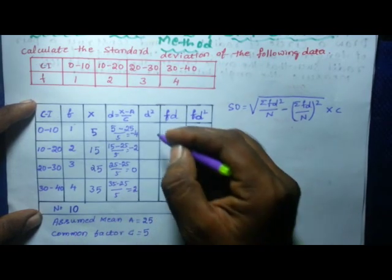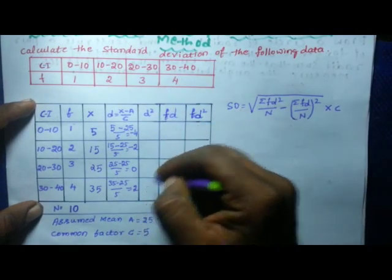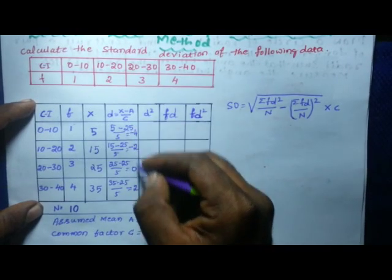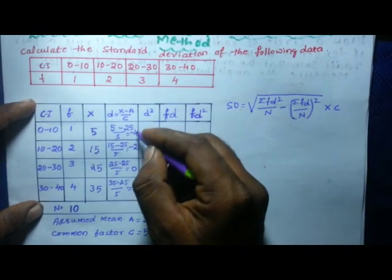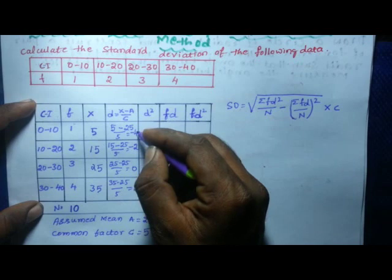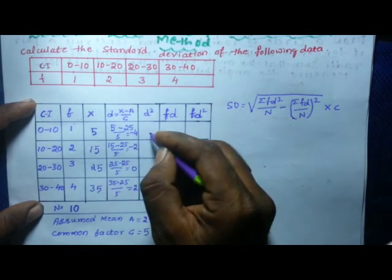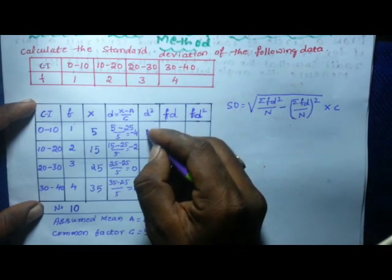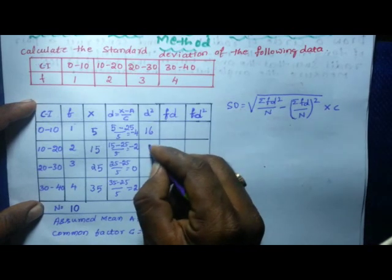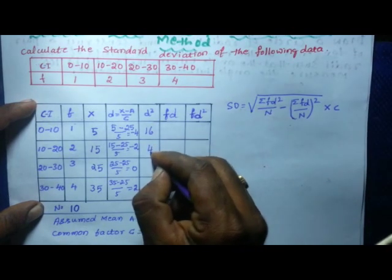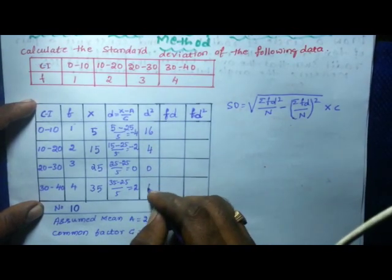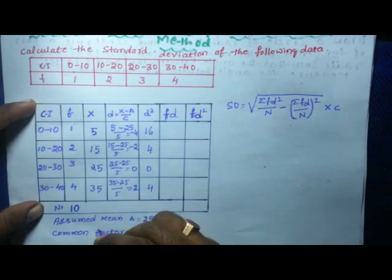Now find D squared for each value. Minus 4 squared is 16, minus 2 squared is 4, 0 squared is 0, and 2 squared is 4.